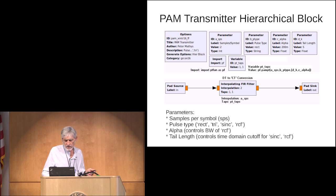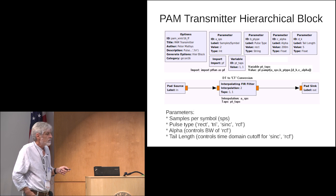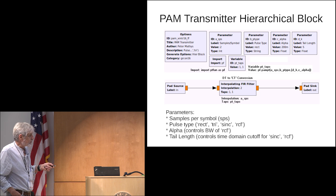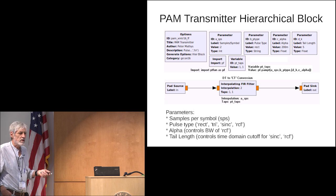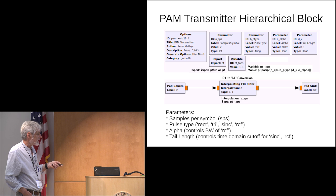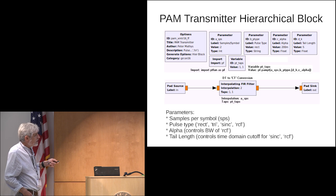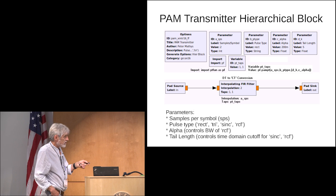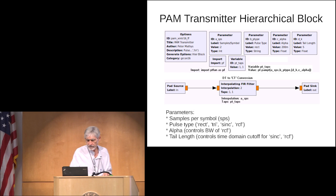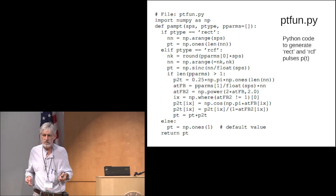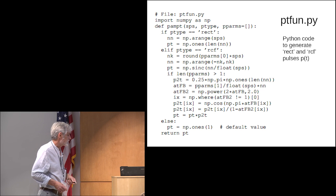When going from discrete time to continuous time, we need to shape the waveform using an interpolating FIR filter. The filter taps depend on whether we want rectangular, triangular, sinc, or raised-cosine-in-frequency pulses. Those pulse samples are contained in a Python function that we import. This is one of the things students learn along the way: working with Python to generate filter coefficients for FIR filters.